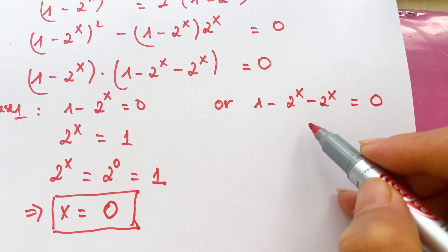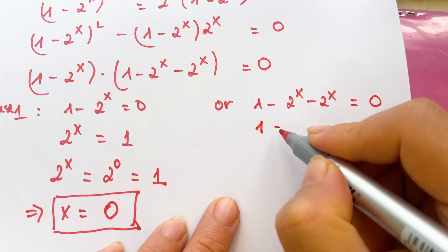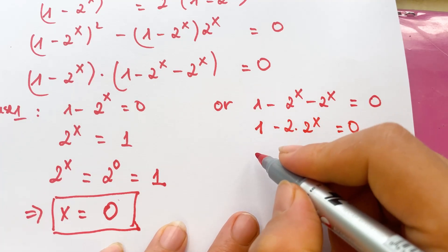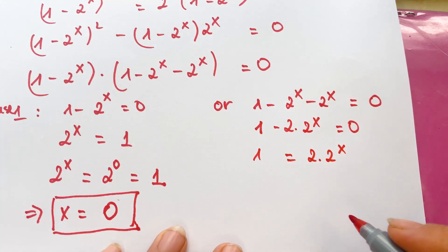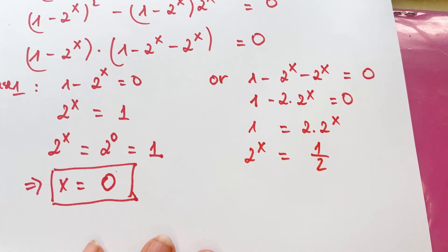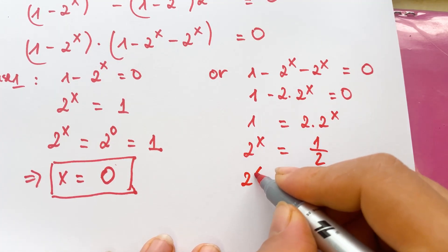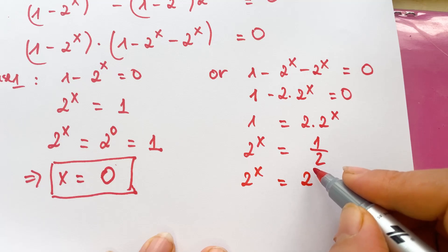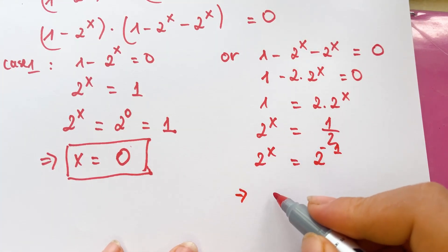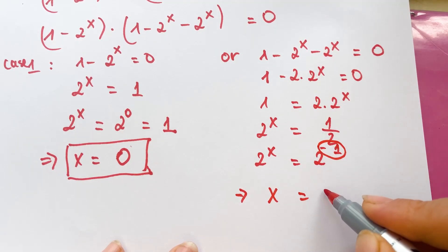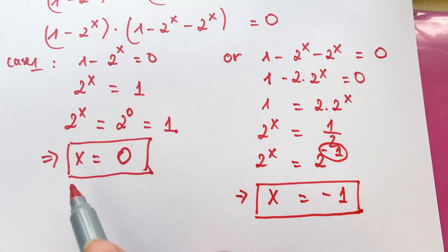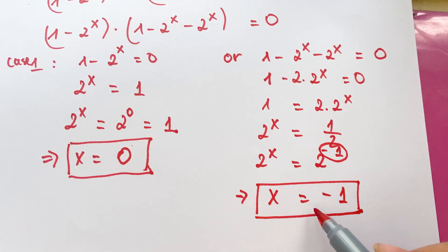Now for case 2: 1 minus 2 times 2 power x equals 0. So you can write 1 equals 2 times 2 power x, which gives 2 power x equals 1 over 2. Therefore 2 power x equals 2 power negative 1, so x equals negative 1. So we have x₁ equals 0 and x₂ equals negative 1.